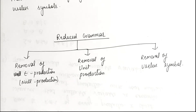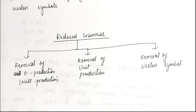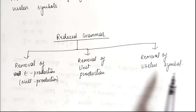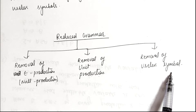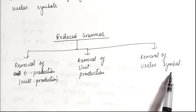After combining all three categories, we can reduce a context free grammar into a reduced grammar. We will discuss all these categories one by one. In this video, I am only going to discuss how we remove the null production from the grammar. Removal of unit production and removal of useless symbols will be discussed in the next video.